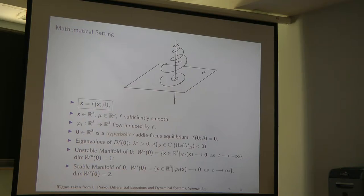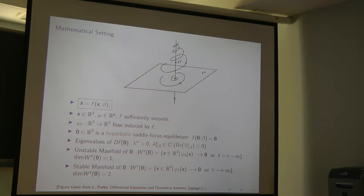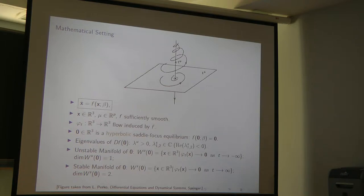There is a flow phi induced by this vector field in phase space. We will assume there is a hyperbolic equilibrium point where the vector field equals zero. This means the linear part of the vector field is enough to describe the local dynamics near this equilibrium point. The linearized part is given by the Jacobian matrix.